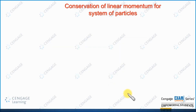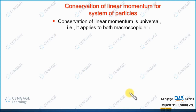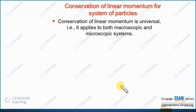This conservation of linear momentum principle is universal in nature — it applies to both macroscopic and microscopic systems. We can apply it to the Earth-Sun system, and even to atomic or nuclear physics where classical mechanics fails.